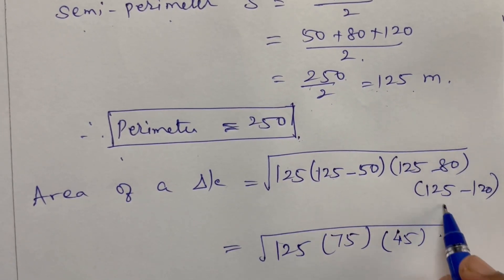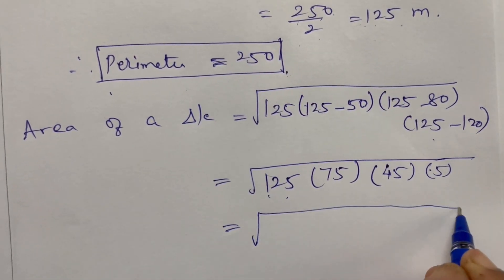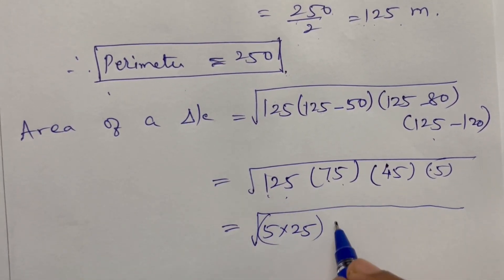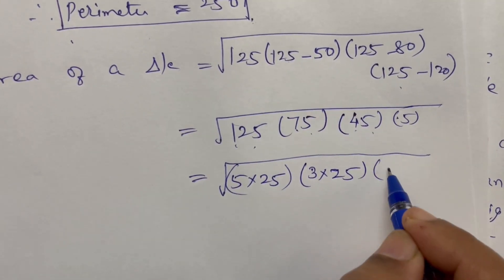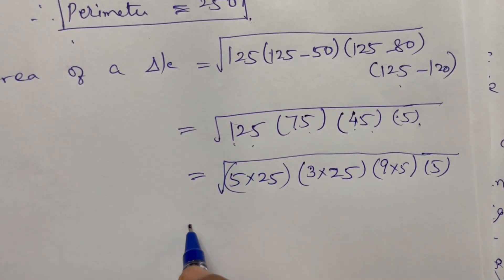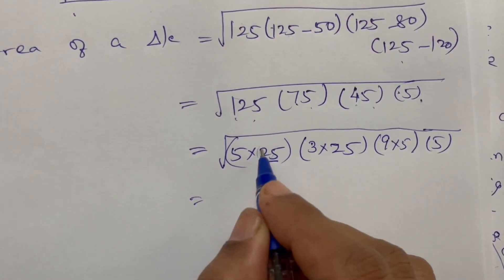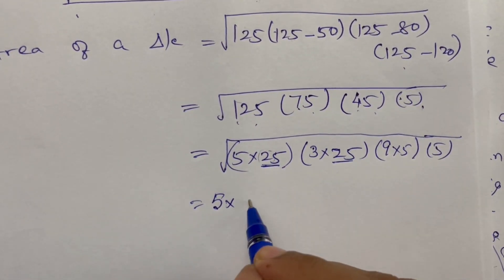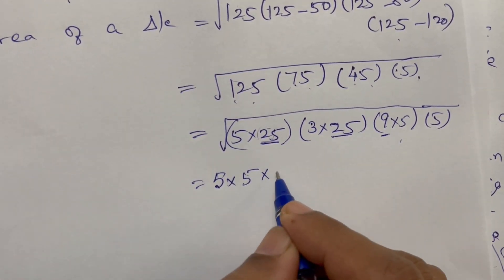125 is 5 into 25. 75 is 3 into 25. 45 is 9 into 5. So we can factor: 5 times 25 times 3 times 25 times 9 times 5 times 5.